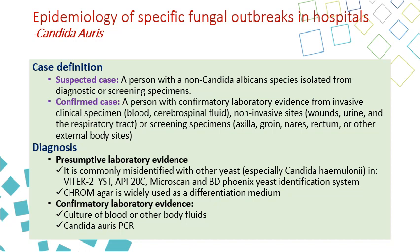For diagnosis, there are two groups: presumptive and confirmatory lab tests. The problem with presumptive tests is that most machines misidentify Candida auris — including Vitek, MicroScan, BD Phoenix yeast identification systems — and usually misidentify it as Candida haemulonii. Some media like ChromAgar can help differentiate it from other Candida types. Confirmatory testing depends on culturing Candida auris from body fluids and blood or a positive Candida auris-specific PCR.